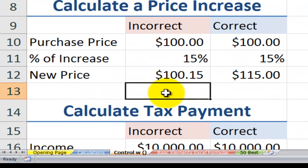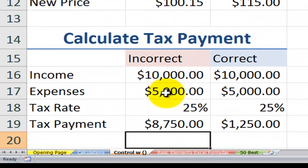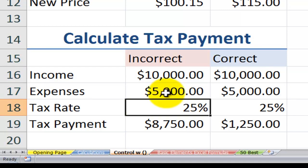Let's take a look at one more example down here, calculating a tax payment. So we have our income and our expenses, and we're expecting to say, well, my net income, as opposed to my gross income, is income minus expenses. And then let's multiply that by the tax rate, which is 25%.